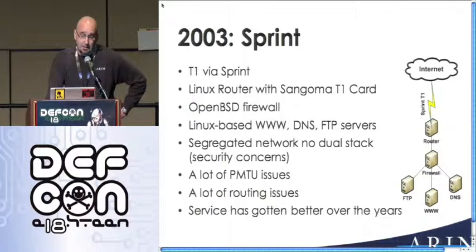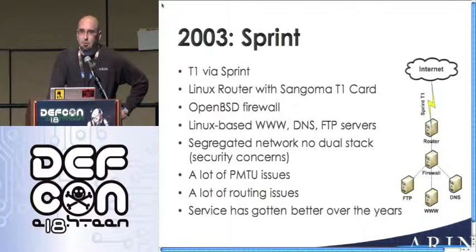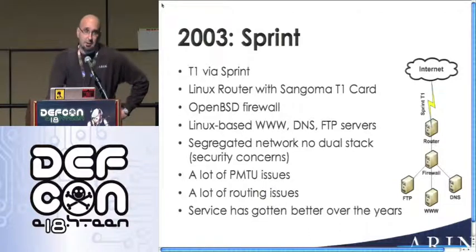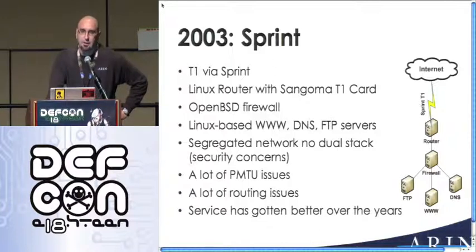We also had a lot of routing issues — we saw Sprint drop routes here and there, but usually they weren't the problem. We'd see entire countries fall off the network. Finland would just be gone and come back a day or two later. You'd see the same with corporations — gone for weeks — because nobody noticed. Nobody was using this stuff, so it didn't really matter.